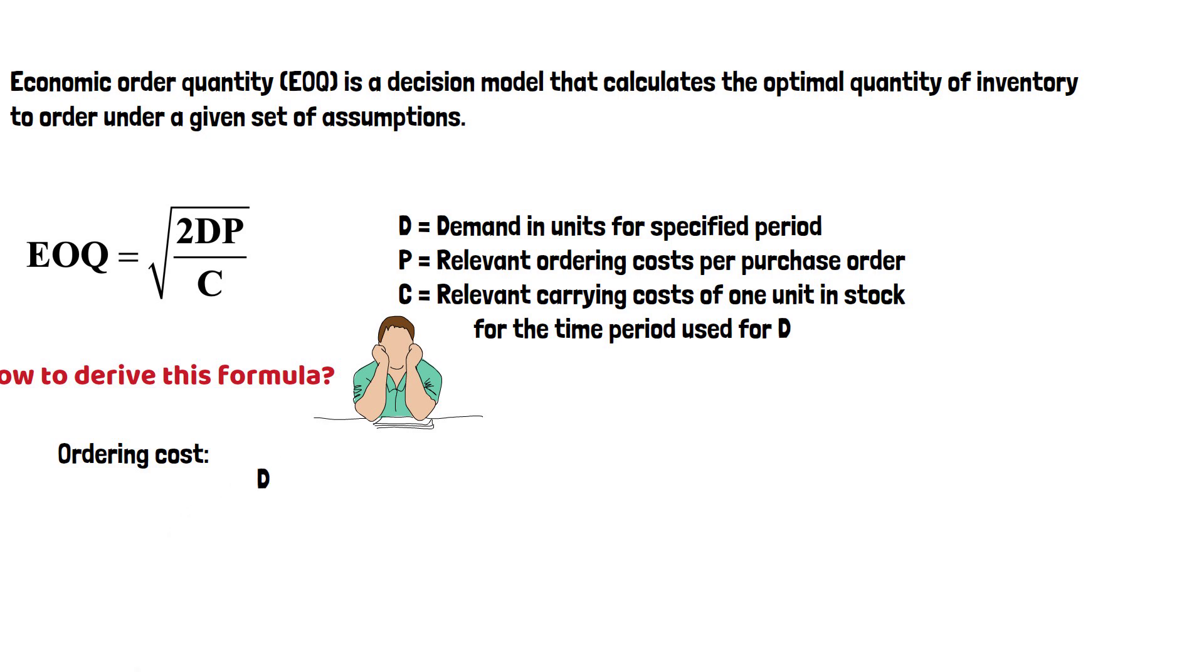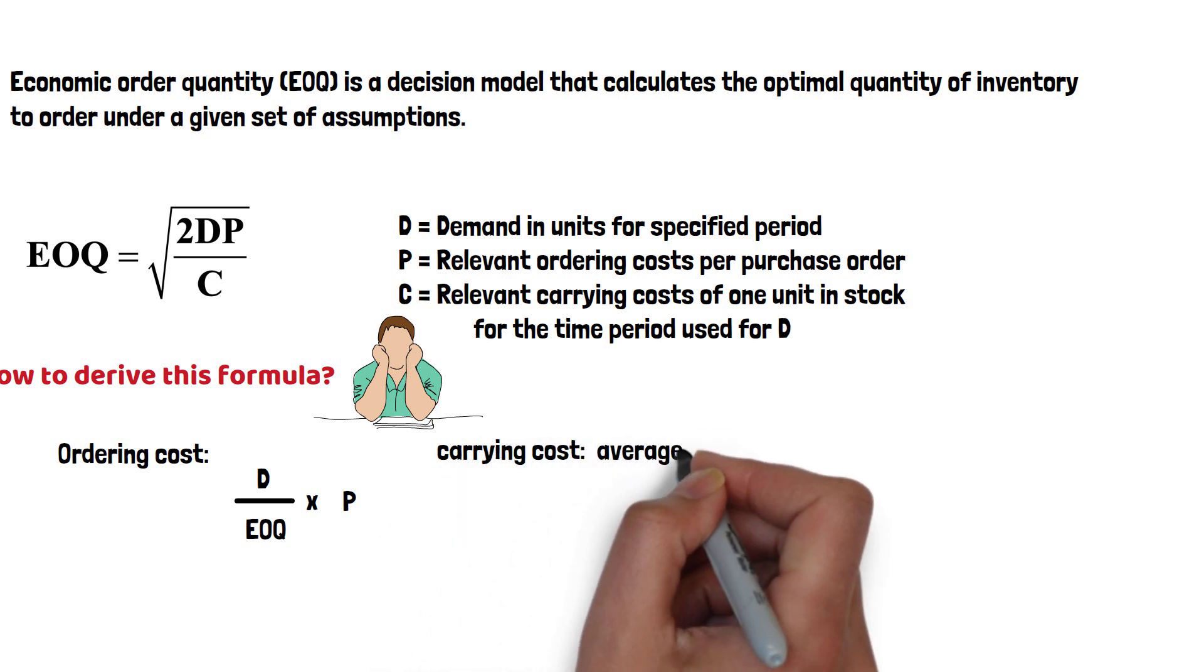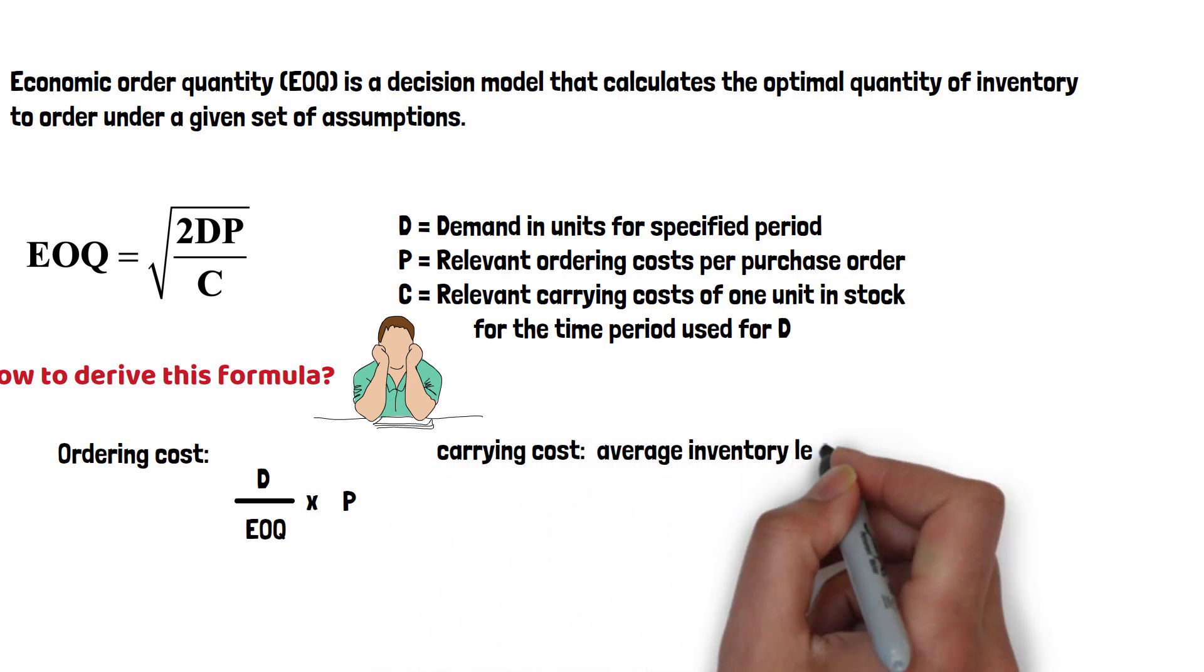First, let's calculate ordering cost. We use the demand divided by the number of orders, the EOQ. This gives the number of orders per period, and then times the purchasing cost for each purchase order. That's the total ordering cost.